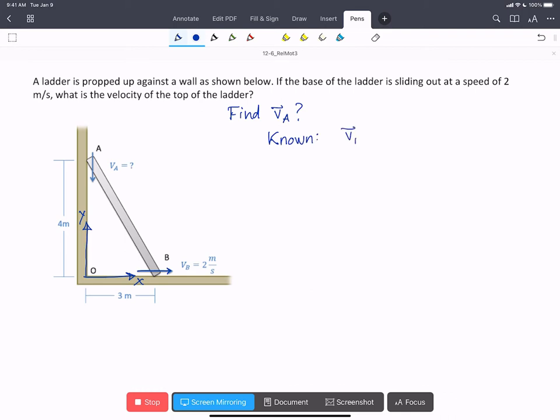So we know that VB is 2 meters per second in the i-hat direction. VA, A has to follow the wall and it has to go downwards. So we can say the velocity of A is going to be negative the speed of A in the j-hat direction.